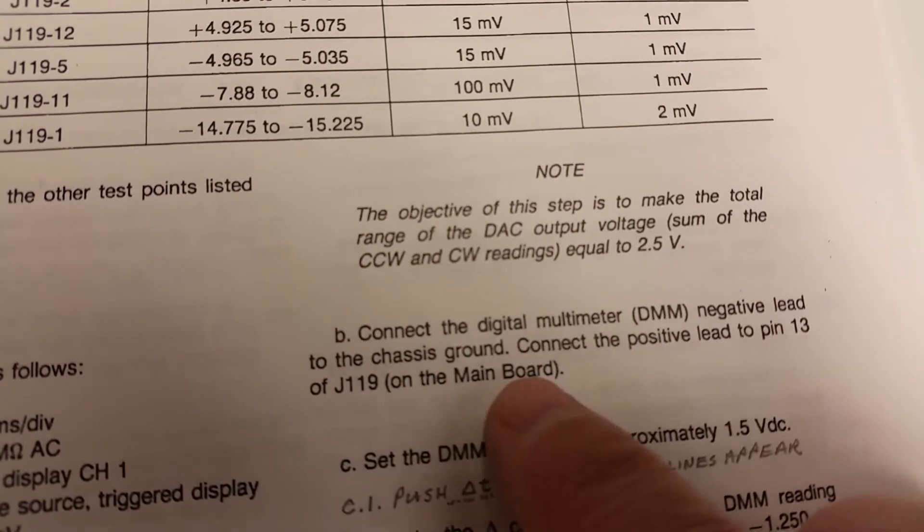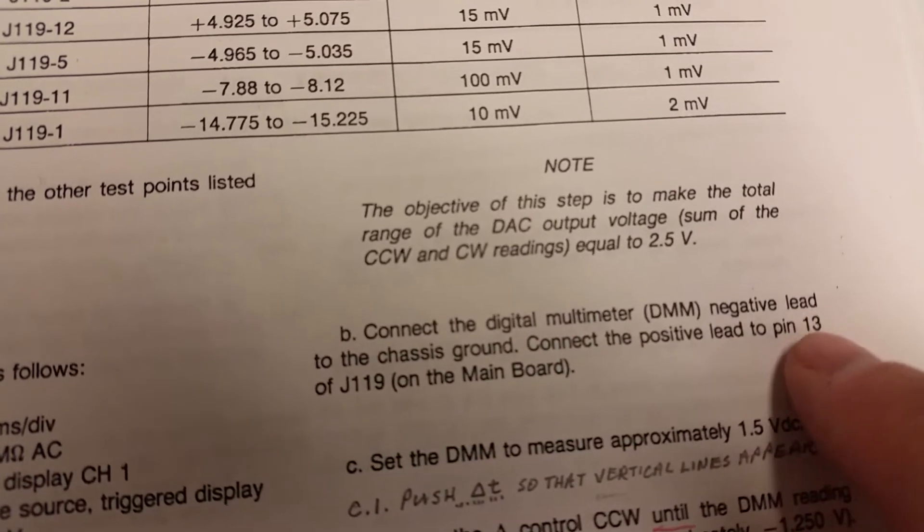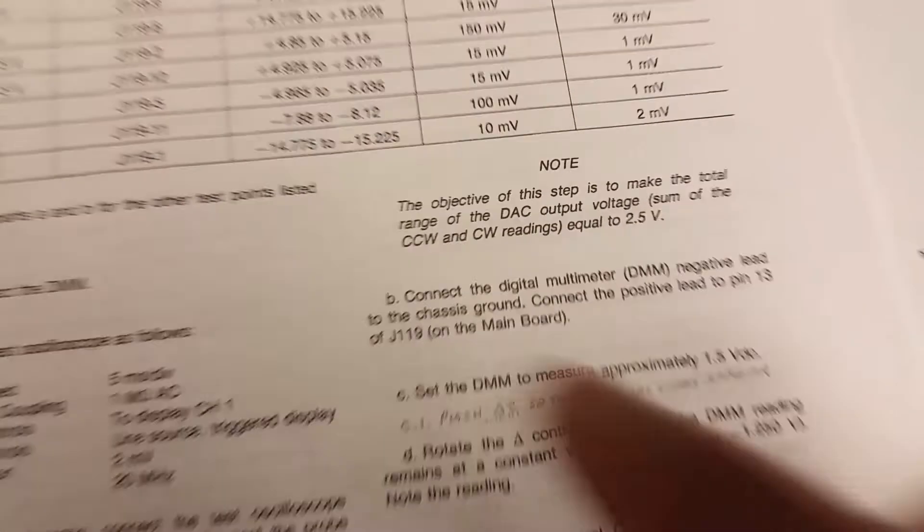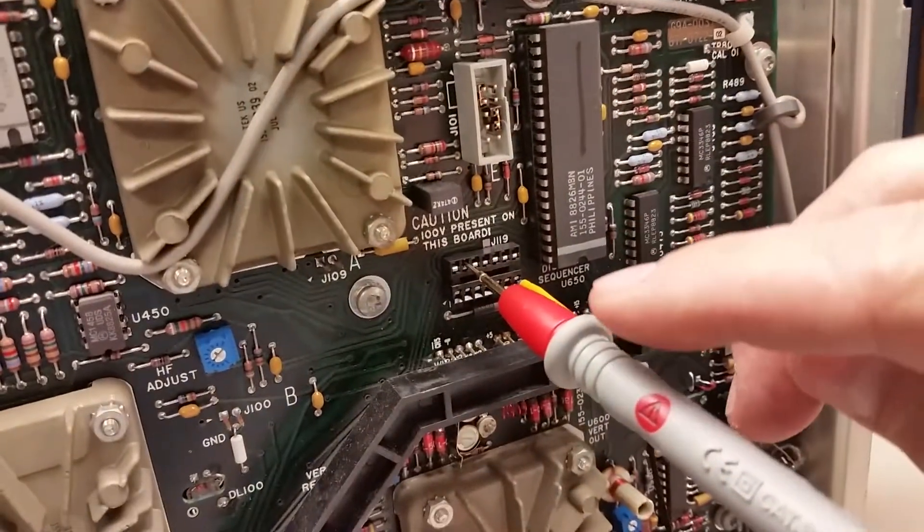The objective here is to get the two readings and add them together to get 2.5 volts. We're going to be on pin 13 of J119 on the motherboard or main board as they call it, the A1 board right there.